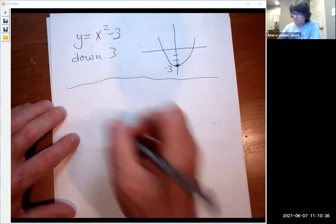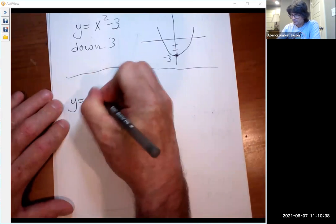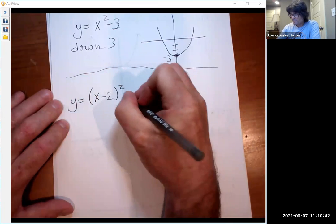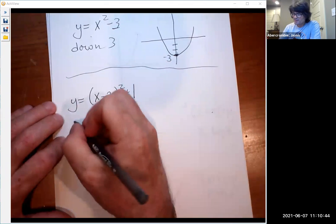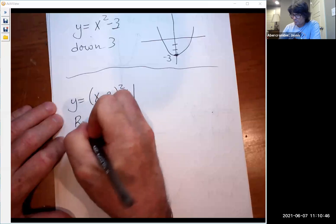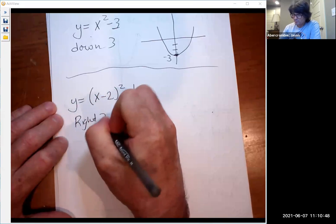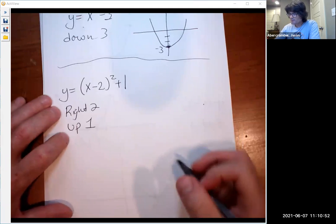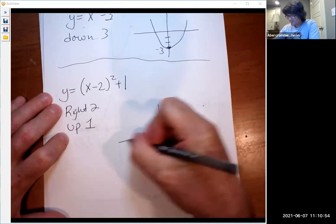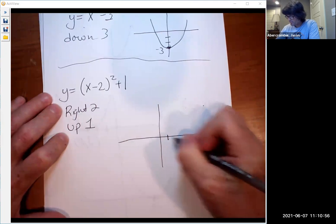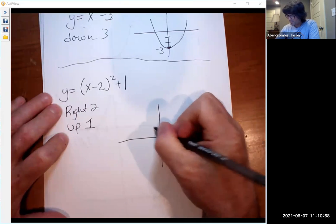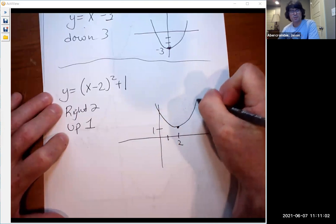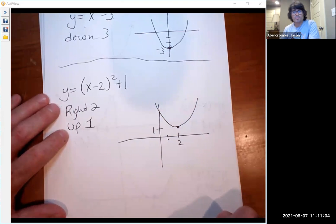Let's put them together. y equals x minus 2 squared plus 1. This is right 2, up 1. So you're going to start at 0, 0. You're going to go right 2 and up 1. And there's your new parabola, right 2 and up 1.